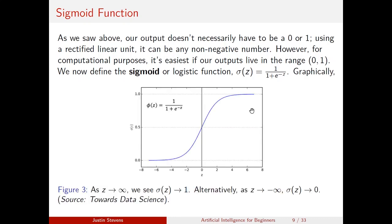Graphically, as z gets really large — as z goes to infinity — the e^(−z) term goes to zero, so the function approaches 1. As z goes toward negative infinity, the denominator gets huge: putting in z equals negative 40 gives 1 plus e^40, an unbelievably big number. So as z goes toward negative infinity, sigma approaches 0.